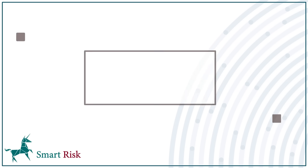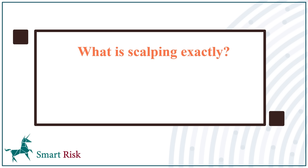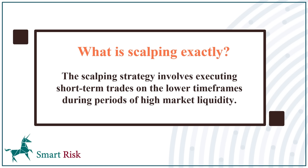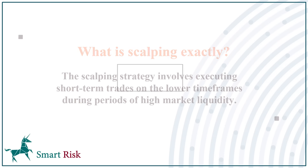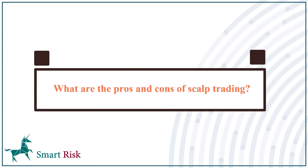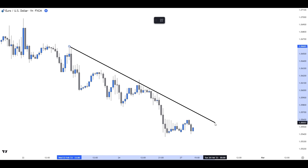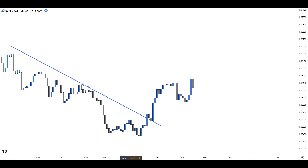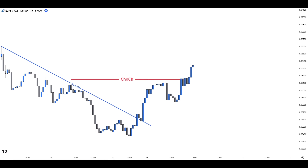Starting with the basics — what is scalping exactly? The scalping strategy involves executing short-term trades on the lower time frames during periods of high market liquidity. What are the pros and cons of scalp trading? On one hand, scalpers may experience higher false signals because they are trading in the lower time frames.